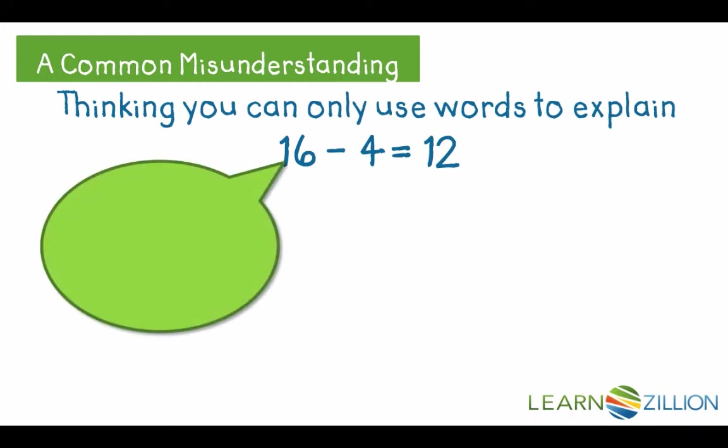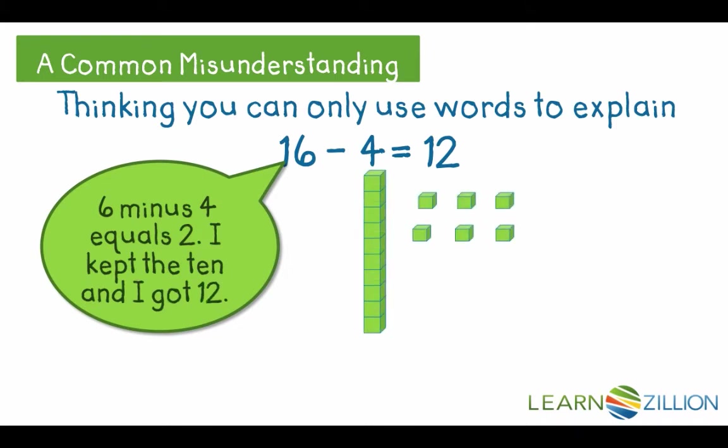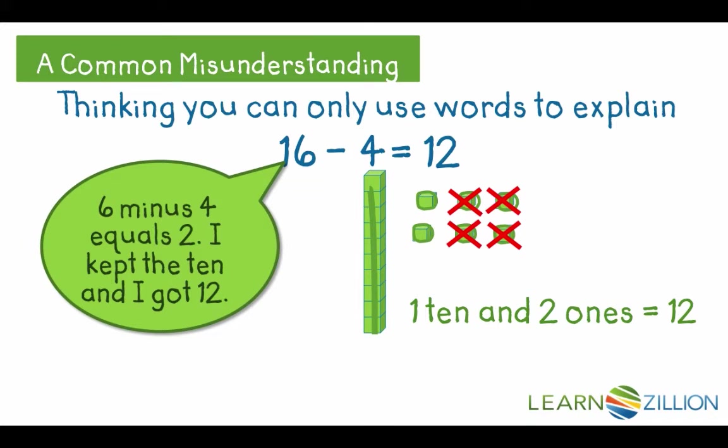we could explain subtracting 4 ones from 6 ones, then keeping the 10, or we could get out blocks that show the 10 stick and 6 ones for 16, then cross off 4 of them or remove them to show there are 12 left, 1 ten and 2 ones. If you wanted to draw the base 10 blocks, you can use a line for the 10 stick and circles for the ones cubes.